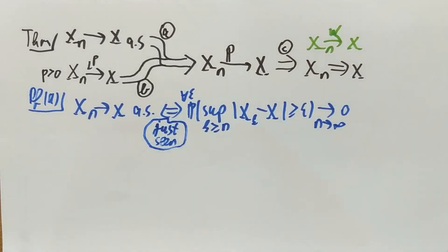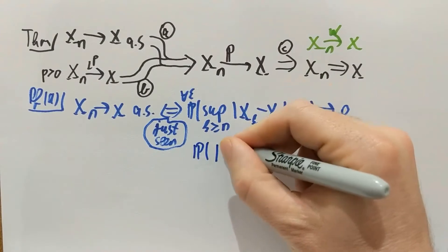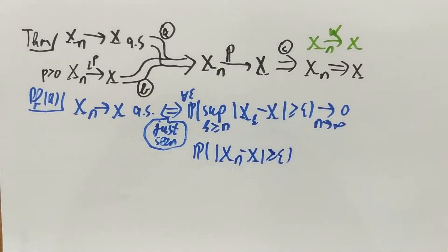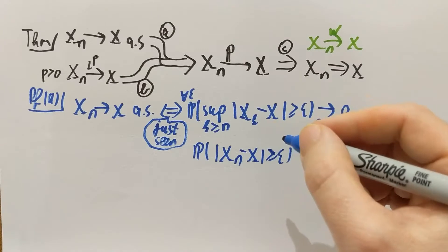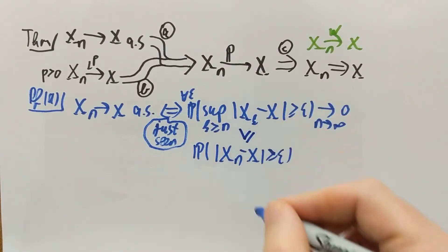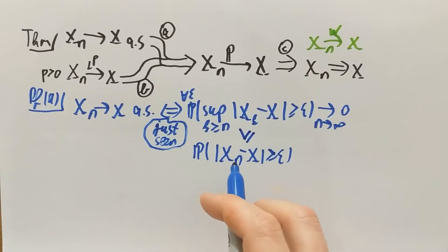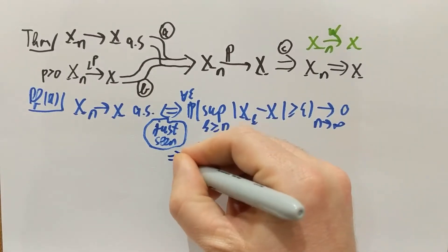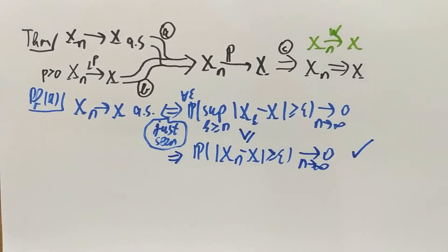The claim is the following: if I look at the probability that |Xn minus x| is larger than epsilon without a supremum, then the supremum over k at least n is also larger than epsilon. So if this event occurs, that event occurs as well, meaning the probability of the top event is greater than or equal to the probability of the bottom event. Therefore, if the supremum probability goes to zero, the in-probability term also goes to zero. That's exactly in-probability convergence — the proof of Part A.